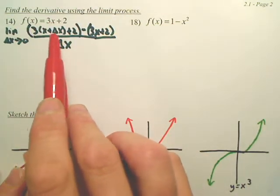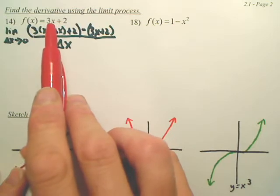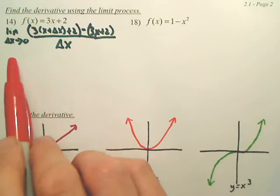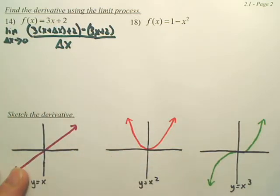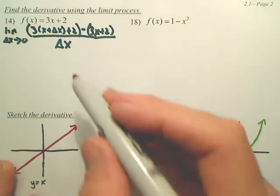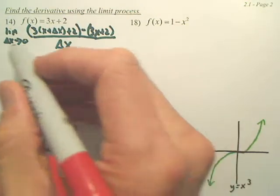This is f of x plus change of x. Basically, every time I see an x, I put x plus change of x into it. And now I find the limit. Really weird, but watch what happens. It's actually kind of cool, kind of weird, but it kind of works out.